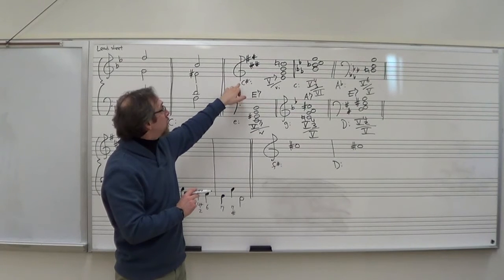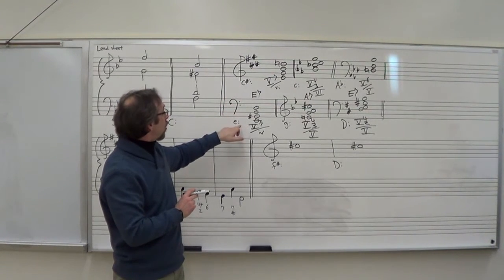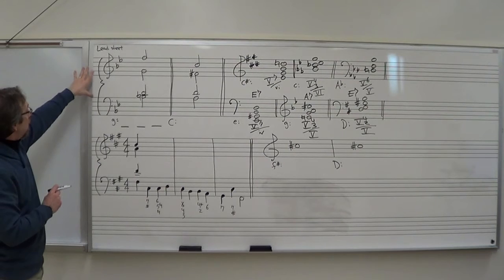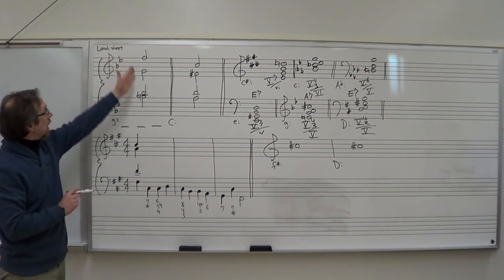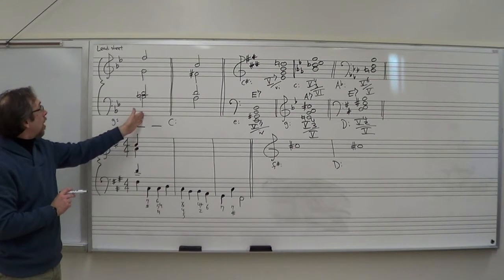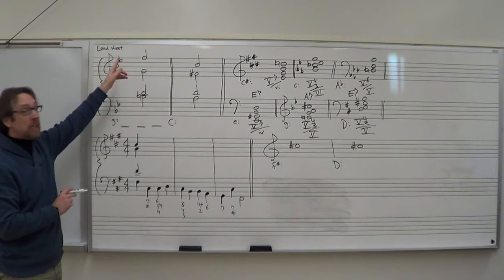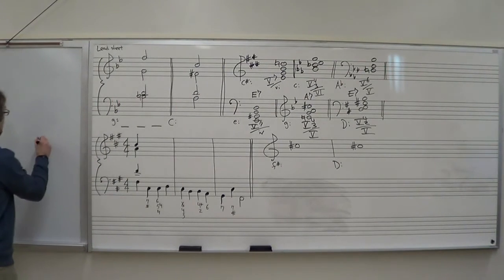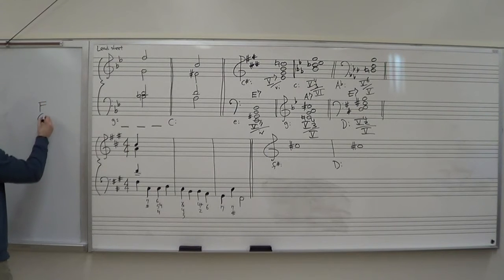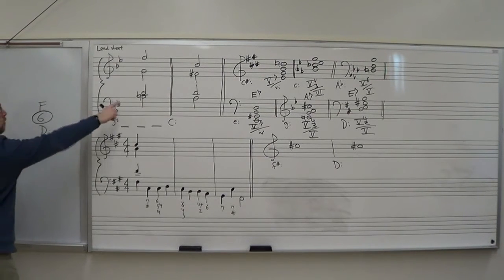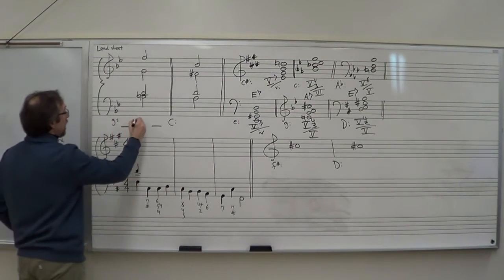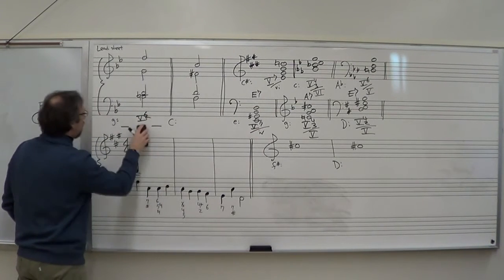We talked about how to spell the chords from the Roman numerals, and how to get the Roman numeral from the spelling. Now let's look at a secondary dominant that is given to us. Our first step is to analyze it both in lead sheet and in Roman numeral analysis form. The pitches are, from bottom to top: B, D, G, F. G is the root of the chord, so this is a 5-7 chord, but not in root position — the B is in the bass, which is the third of the chord. So this would be 6-5.